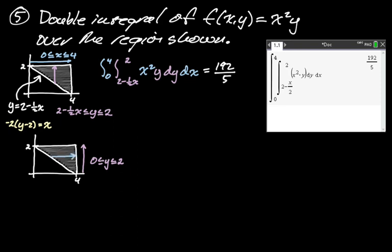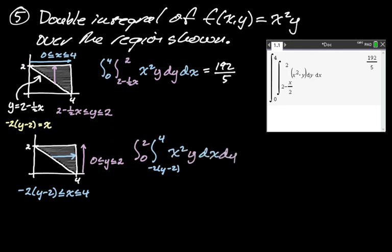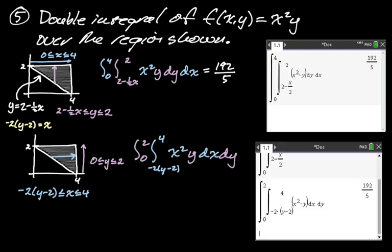Y goes from 0 to 2, and x goes from left to right — from the line x = −2(y−2) over to x = 4. So the bounds for x are −2(y−2) ≤ x ≤ 4. This time, x depends on y, so x has to be the innermost integral and y, with constant bounds, goes last. We set up: 0 to 2 for y, −2(y−2) to 4 for x, integrand x²y, dx dy. I use a calculator on this as well.